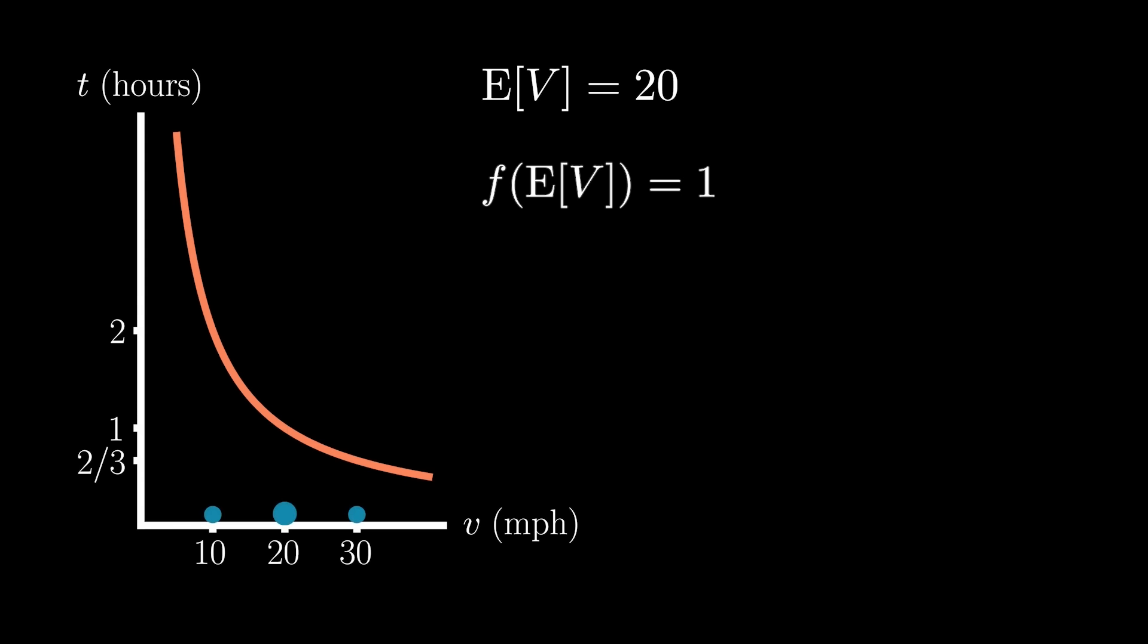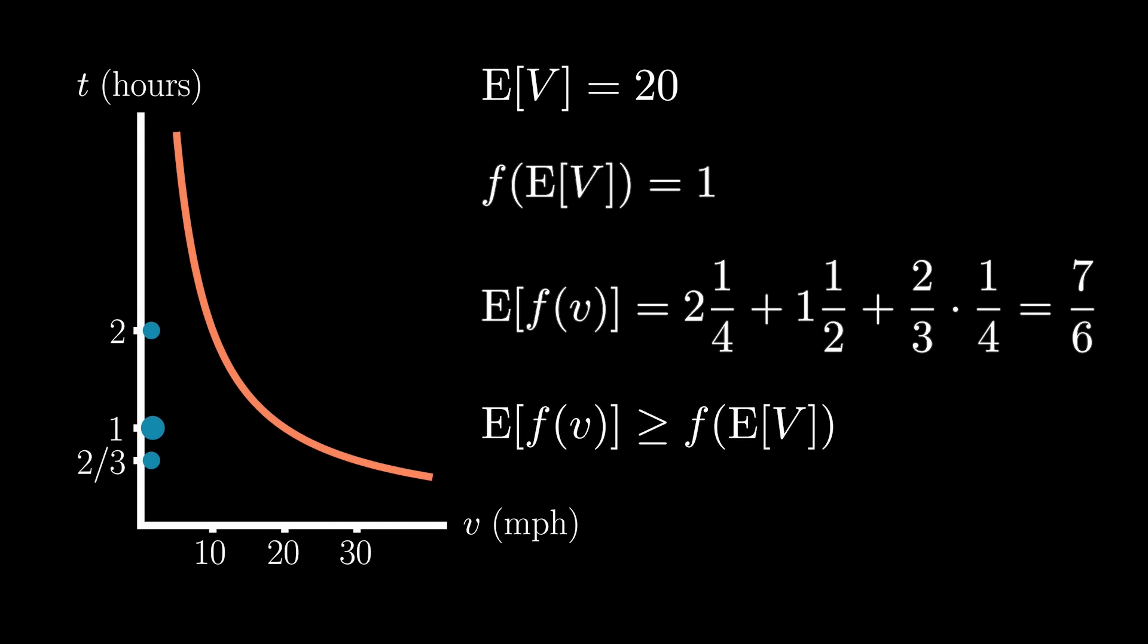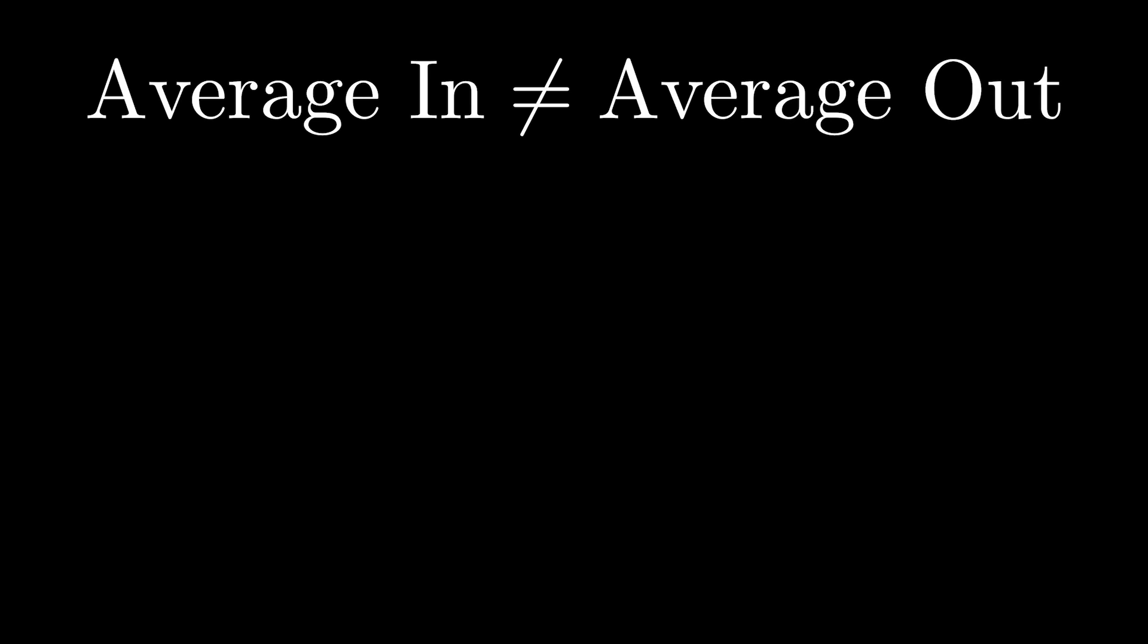However, let's now plot our three possible average travel speeds, and I'm going to make the blue circle associated with 20 miles per hour twice as large as the others, to reflect the fact it has two times the probability of occurring. We can now map those three possible outcomes to our model, and compute the expected value of t, and if we do that, we arrive at 7 over 6. And here we see the flaw of averages in action, and we're seeing it occur for a fairly simple system or application. And hopefully you now understand that average in may not lead to average out.